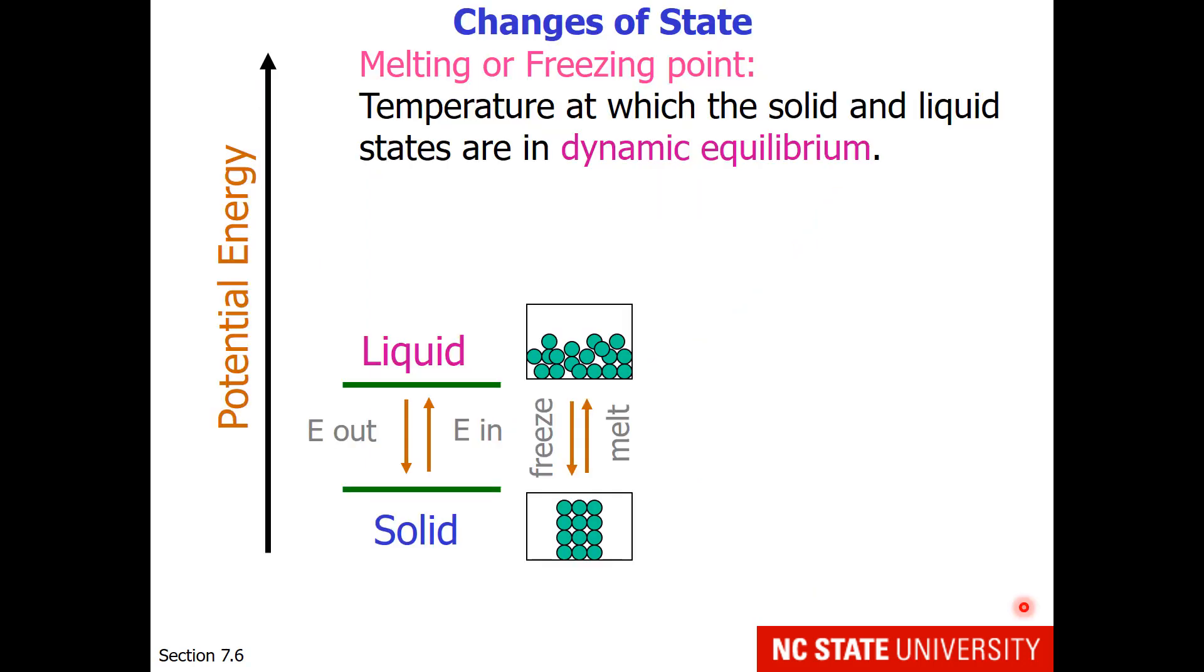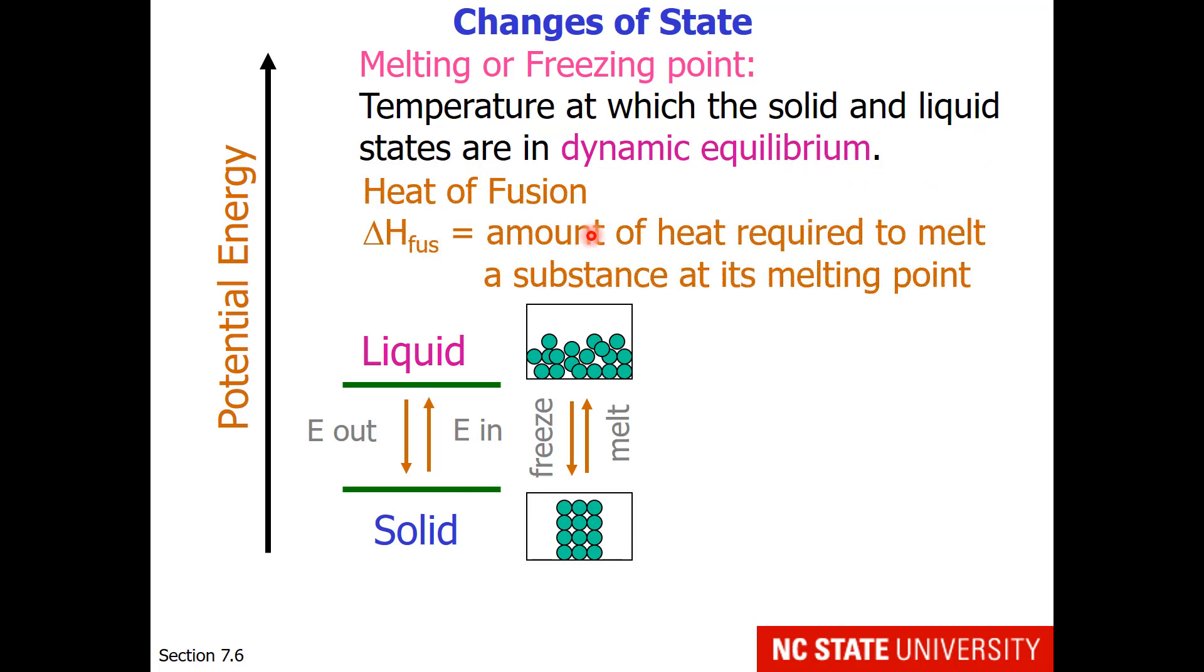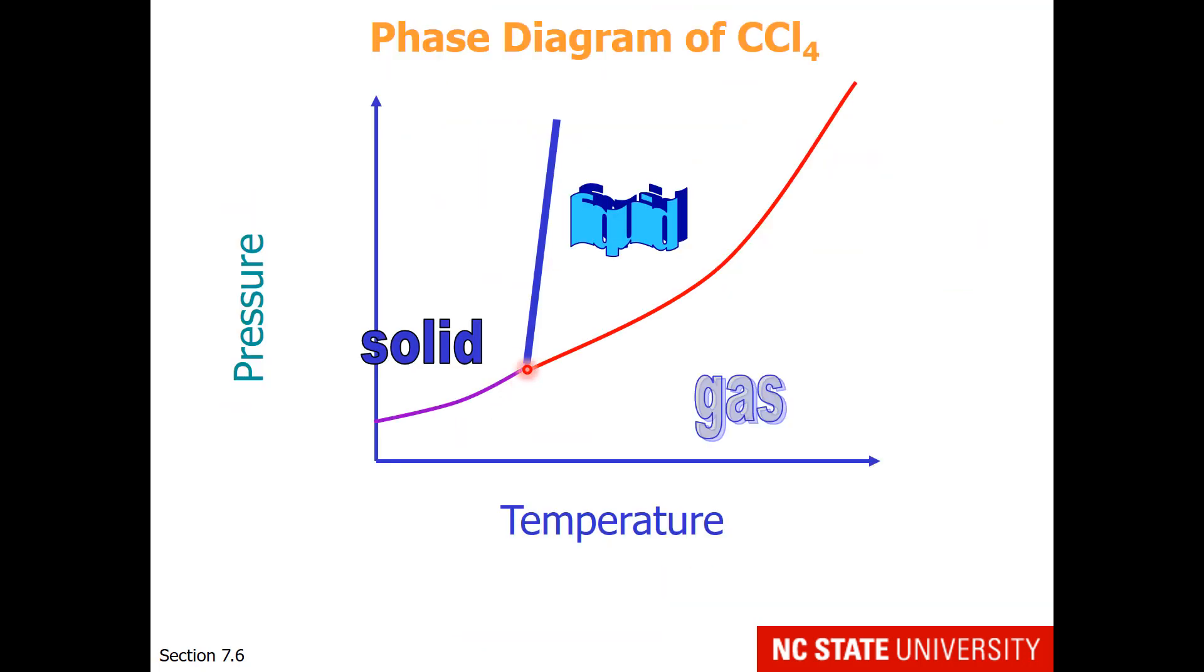Where solid and liquid are in equilibrium, melting, if we put energy in, or freezing, if we take energy out, occur. The melting and the freezing points are temperatures at which the solid and liquid states are in dynamic equilibrium. The heat of fusion is the amount of heat required to melt a substance at its melting point. And the stronger the intermolecular forces, the higher the melting point. Where are solid and liquid at equilibrium? On this blue line in the diagram.